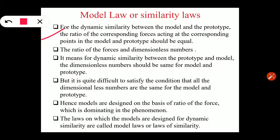The ratio of the corresponding forces acting at the corresponding points in the model and prototype should be equal. इसका मतलब यह है कि कोई भी model और prototype के बीच में similarity कब होगी — जब उनके बीच में जो forces act कर रहे हैं, suppose एक system में gravity force है, pressure force है, viscous force है, surface tension force है, तो जब prototype और model दोनों के forces का ratio लेंगे तो ratio similar आना चाहिए।